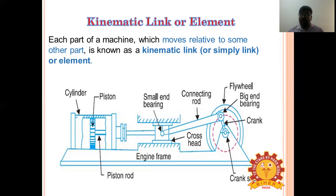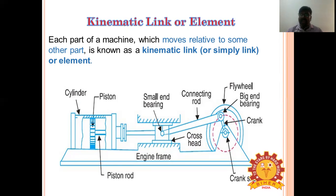Each part of a machine which moves relative to some other part is called a kinematic link. The characteristics of a link are: it should have relative motion, and it must be a resistant body.